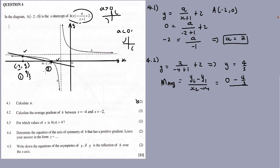Everything divided by x2 which is negative 2, minus x1 which is negative 4. So it's negative 4. That gives us negative 4 over 3 in the numerator. Negative 2 plus 4 is 2. So the gradient should be negative — it's negative 2 over 3.